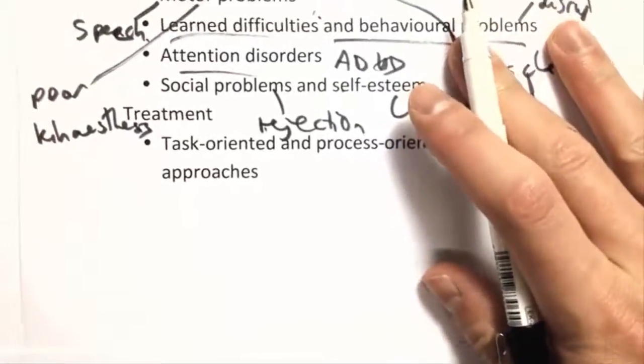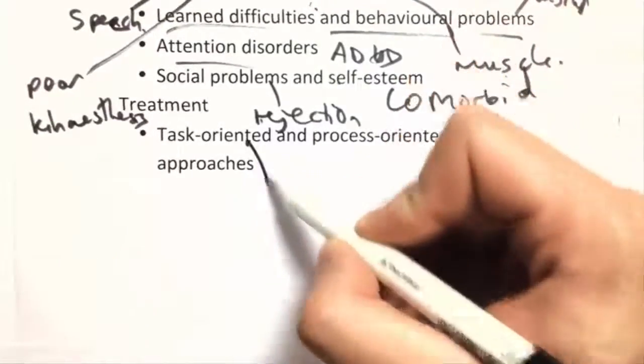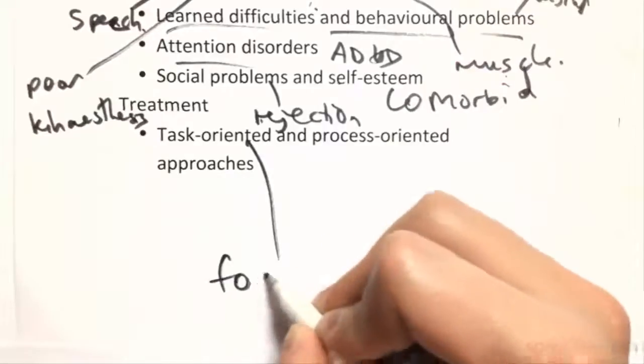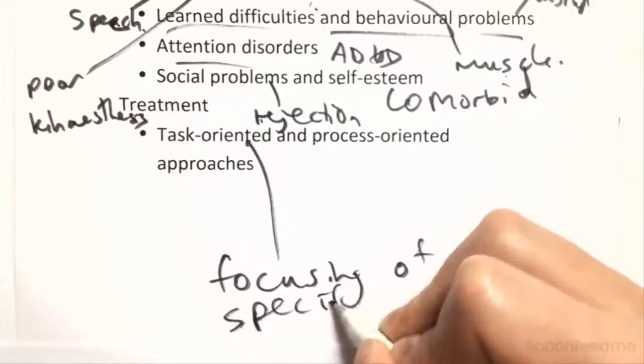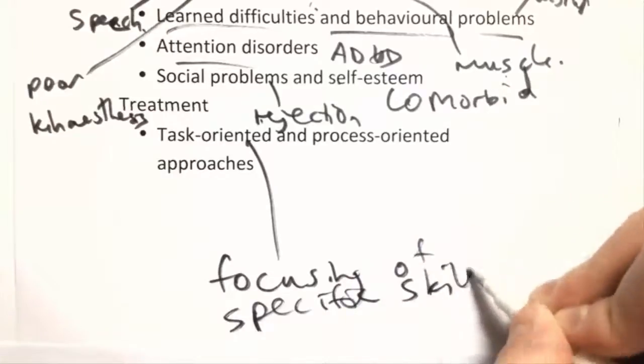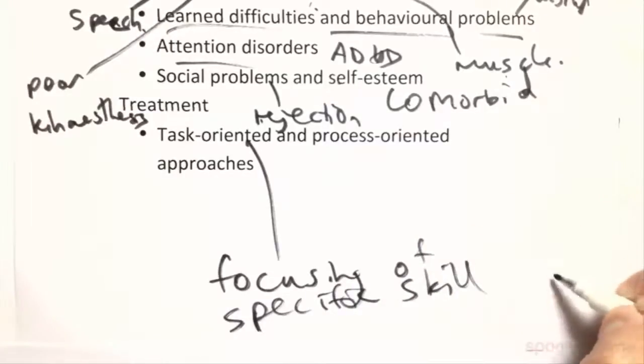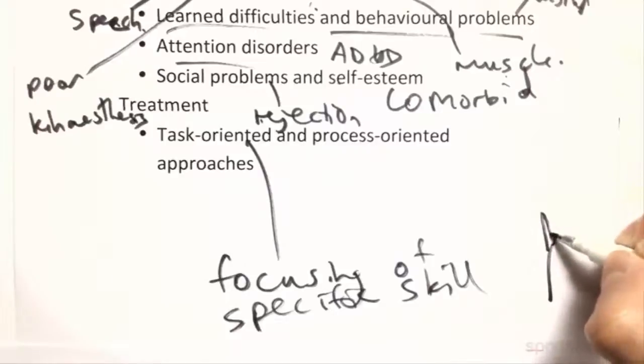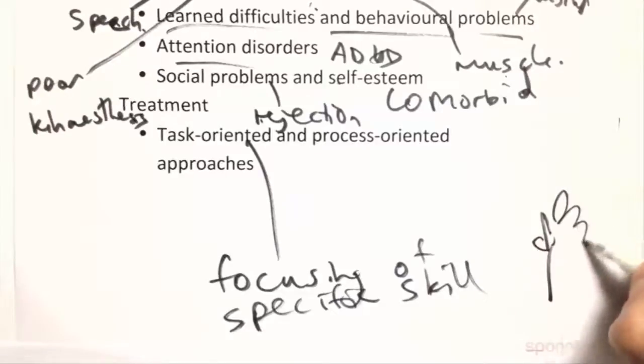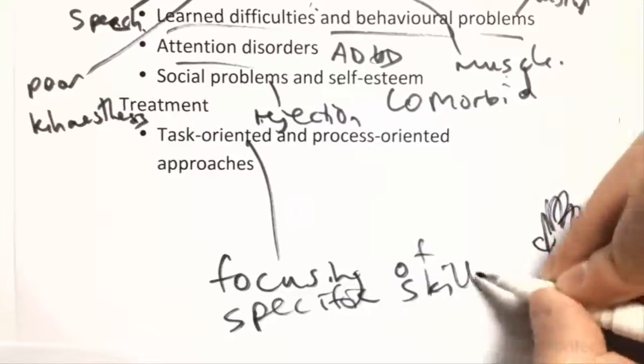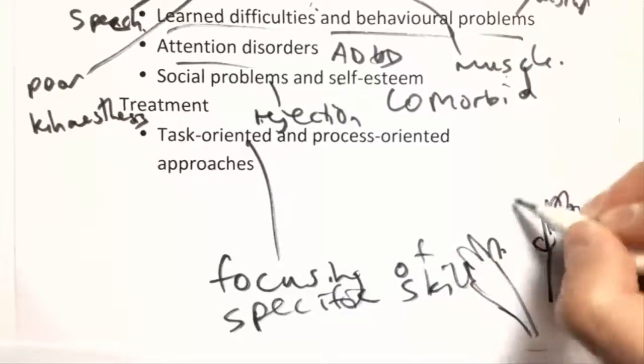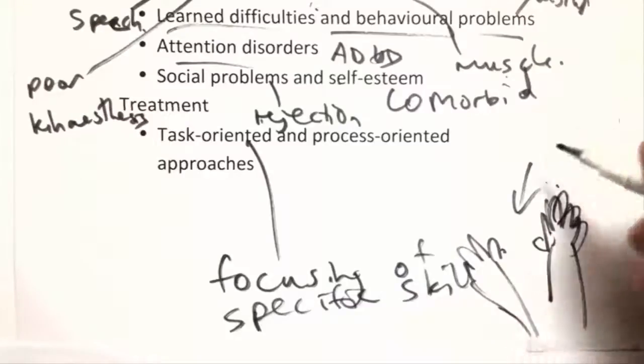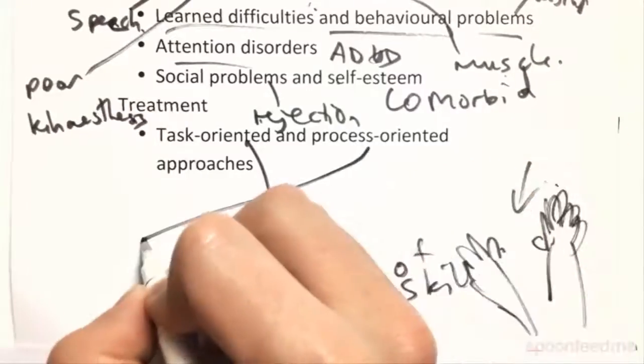Treatment is kind of, there's two things we can do. Task-oriented. So that means focusing on a specific skill. So if we know it's a catching thing, so we go out and we play ball with him and we teach him how to do the catching thing. Or whatever, right? It's just a specific thing if we know it. But normally we don't. So process-oriented approach. Identify the underlying process.